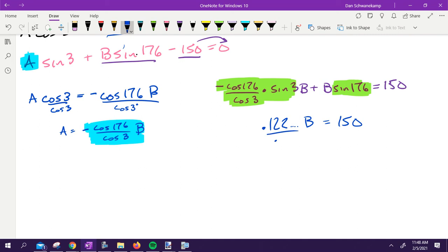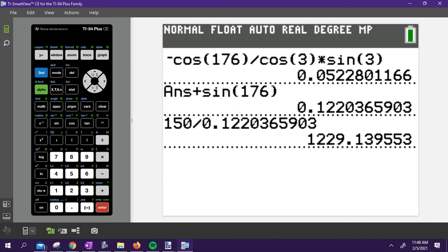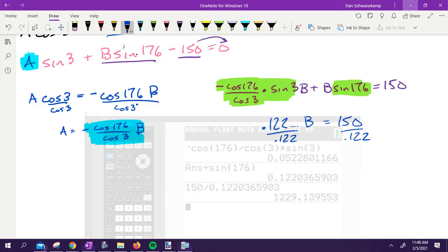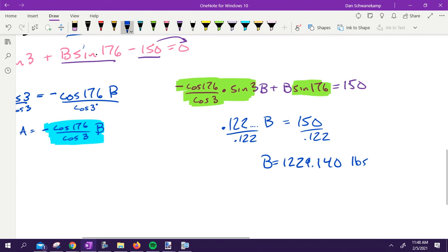Divide by that point one two two number. Divide that by that point one two two number. So in my calculator, it's 150 divided by that number right there. I hit enter. That is B: 1229.140. B equals 1229.140. That's the pounds of force that it is currently holding on B.